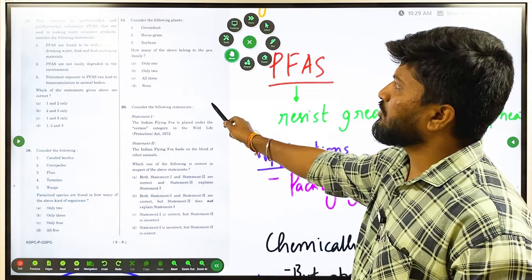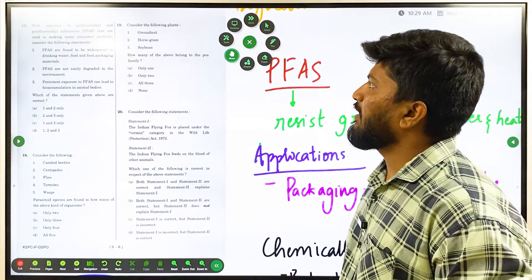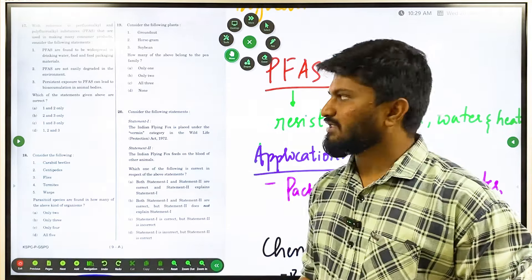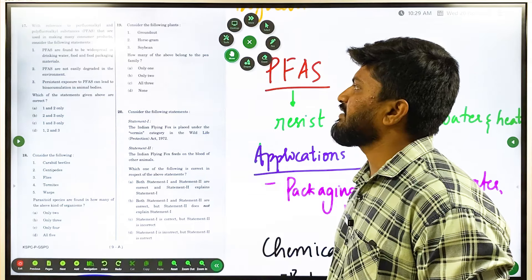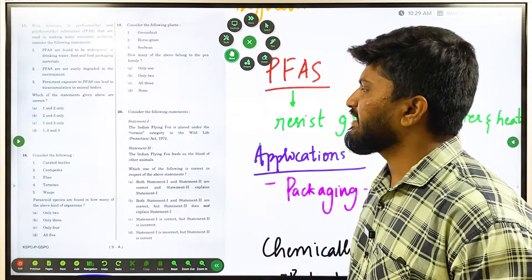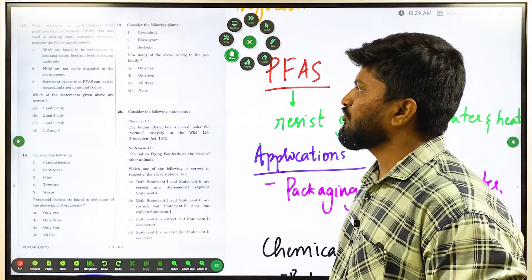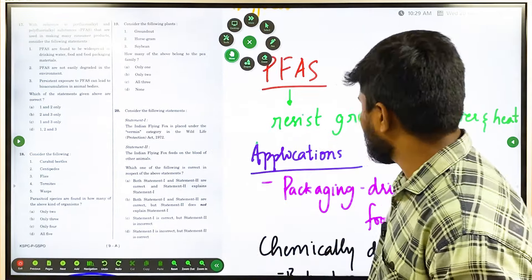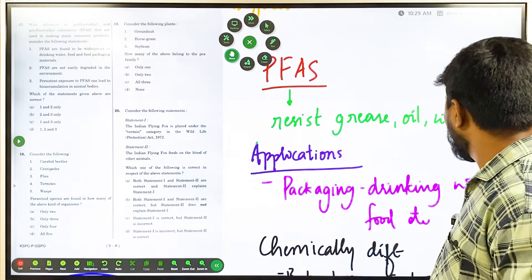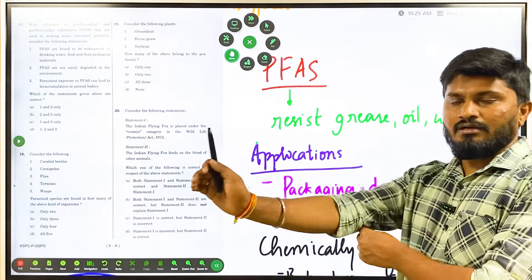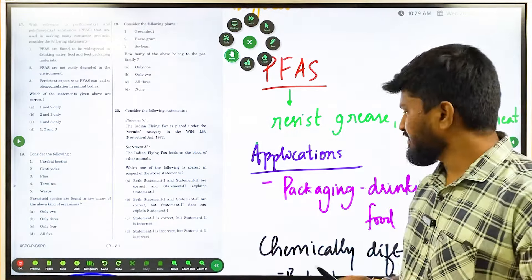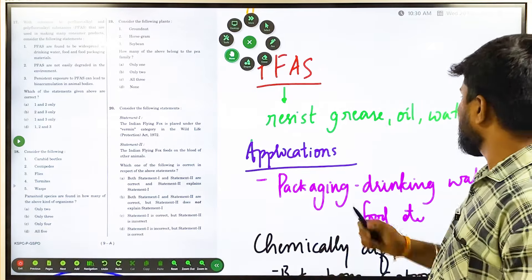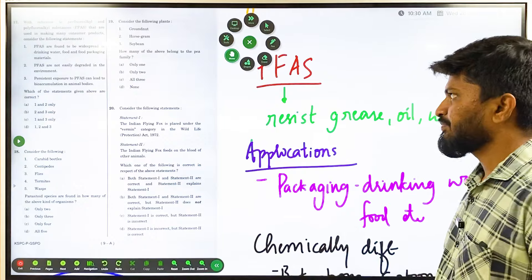Question number 7 is about perfluoroalkyl and polyfluoroalkyl substances, that is PFAS, used in making many consumer products. Statement 1: PFAS are found widespread in drinking water, food, and food packaging materials. PFAS is a chemical resistant to grease, oil, water, and heat, which makes it useful for consumer products such as food packaging. So statement 1 is correct.